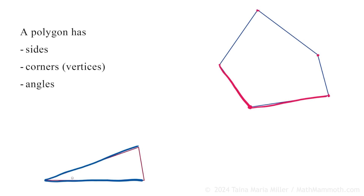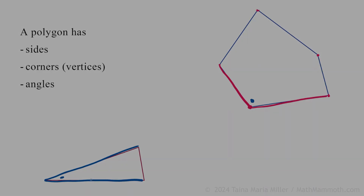You can think of it this way: if you were living in this corner here and had your chair here, or if you had your chair in this other corner, in which one would you have more space and more room to move? In this one. So that's a bigger angle than this one.